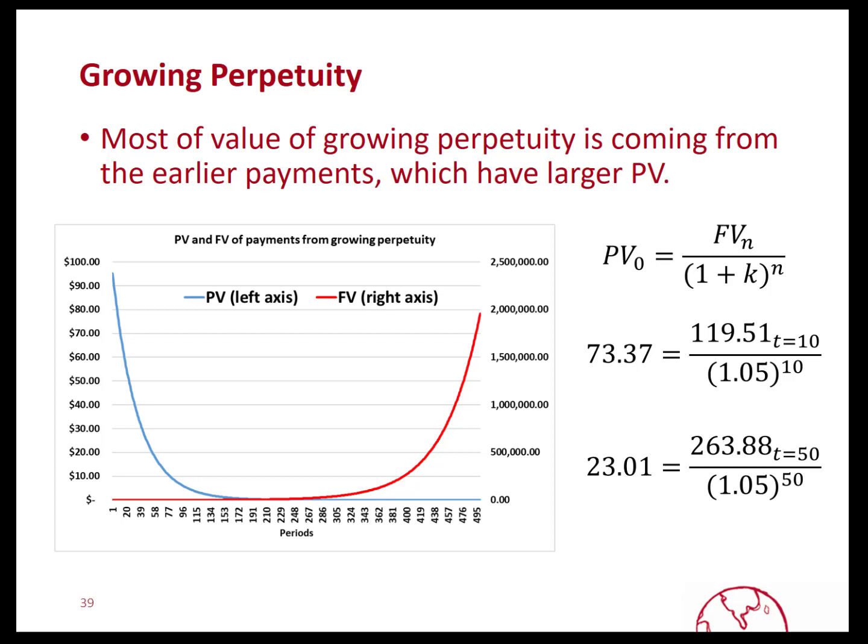Notice that the present value of this growing perpetuity is the sum of each of these payments every year in perpetuity, and that the 50th payment adds far less to that total than the payment in the 10th year. This is typical because of the time value of money and the power of compounding. That's it — thanks very much.